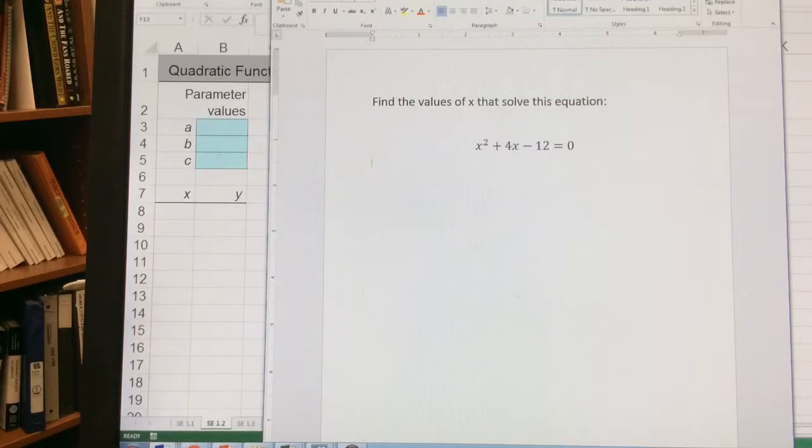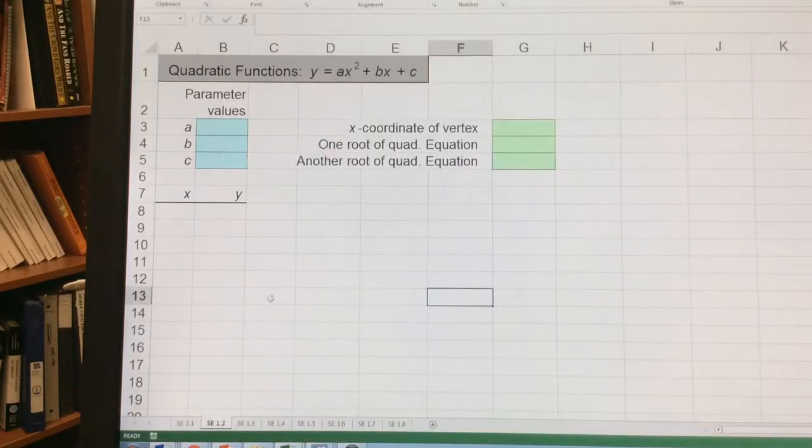x squared plus 4x minus 12 equals 0. We want to find the values of x that solve this. Now we can factor that, and you might see the factorization here. But we want to look at examples where maybe it's not as clean to factor, and how do we go about solving that?